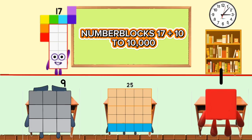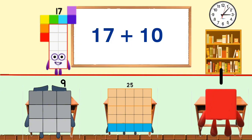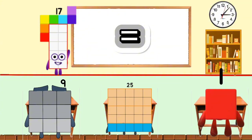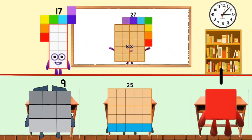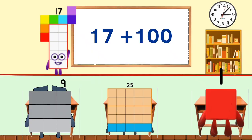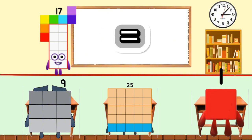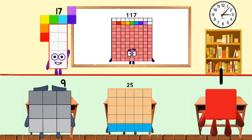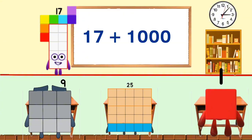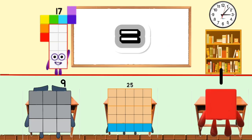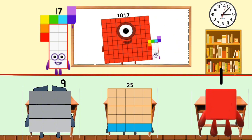Number Blocks: 17 plus 10 to 10,000. 17 plus 10 equals 27. 17 plus 100 equals 117. 17 plus 1,000 equals 1,017.